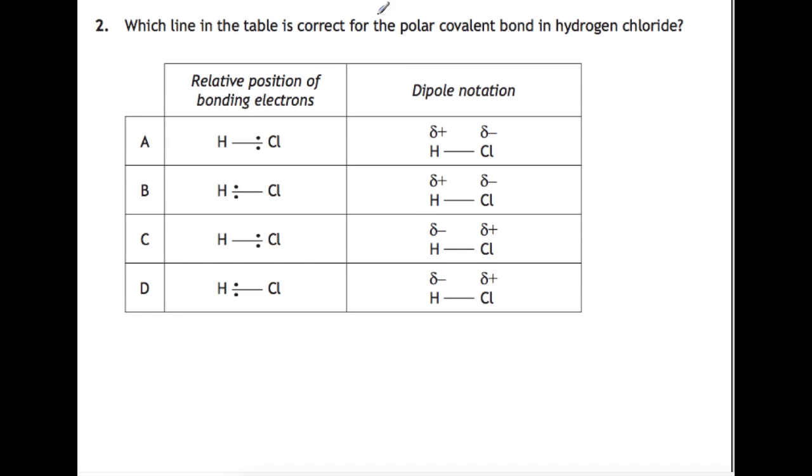Question 2. Which line in the table is correct for the polar covalent bond in hydrogen chloride? If you have a look at the table in your data book the electronegativity of hydrogen is 2.2 and chlorine is 3. This means that the electrons sit closer to the chlorine than they do to the hydrogen so it has to be either A or C. And that means that your chlorine is then slightly negative because the electrons are closer to it. So the answer is A.